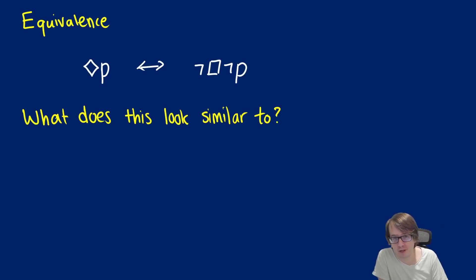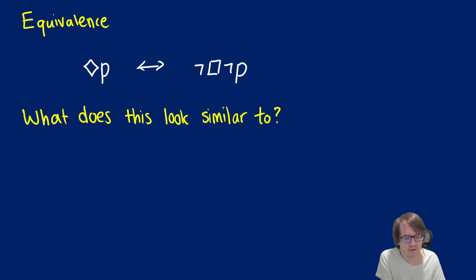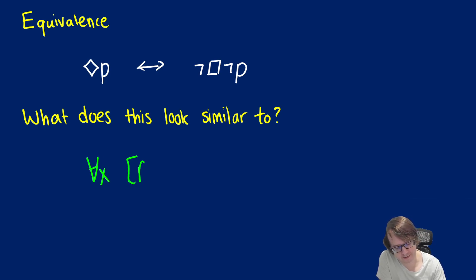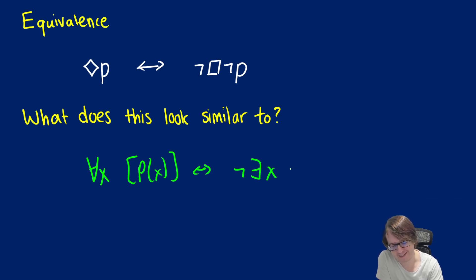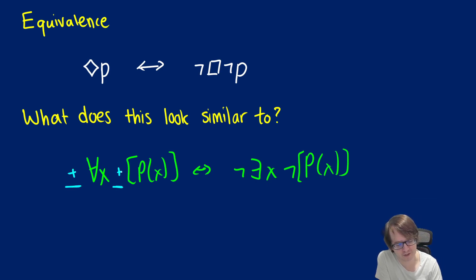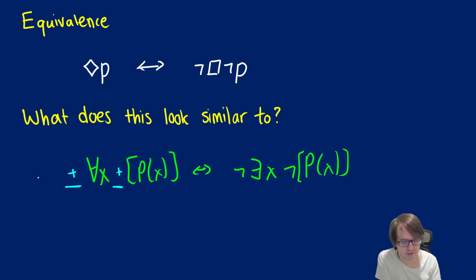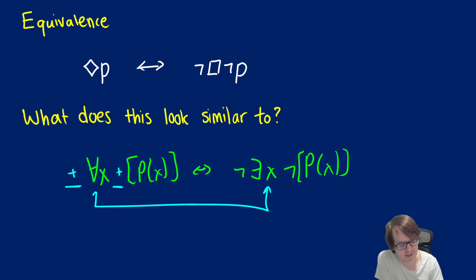We're going to talk about equivalents and then a new derivable rule called diamond elimination. Based on what we've learned so far in quantificational logic, if we have for all x, P(x), this is equivalent to there does not exist an x, not P(x). When we do the conversion, we change the positives and negatives, and then we take our quantifier and flip it.